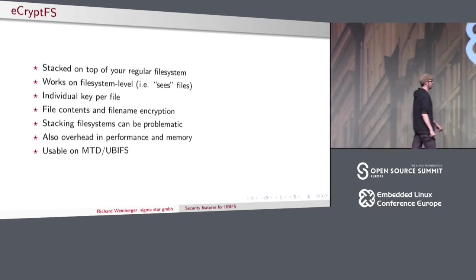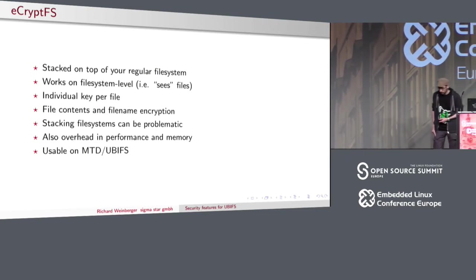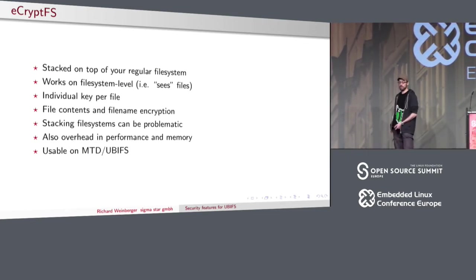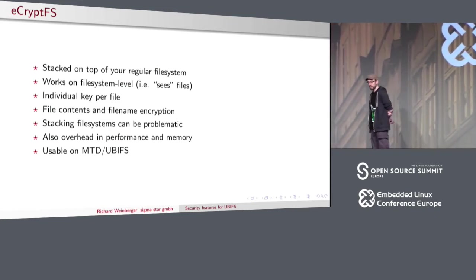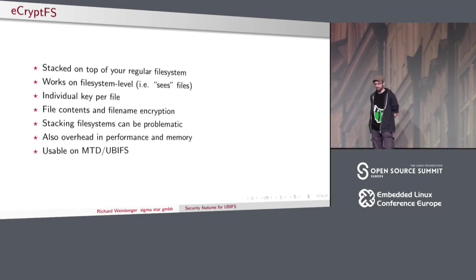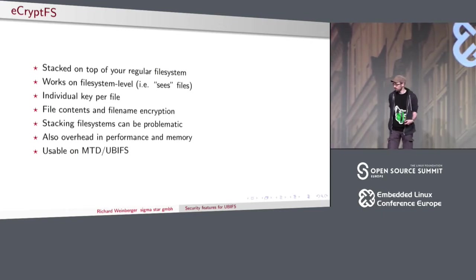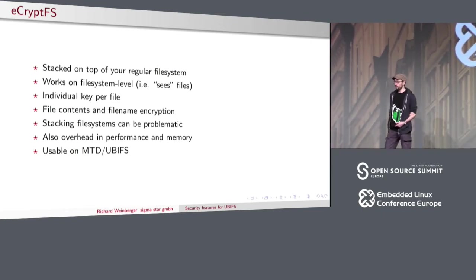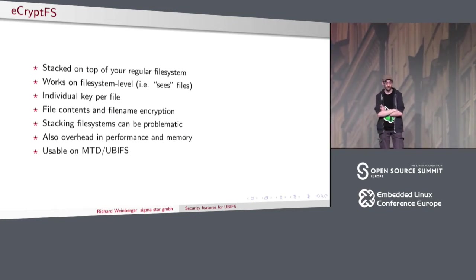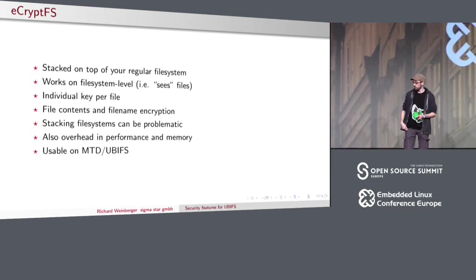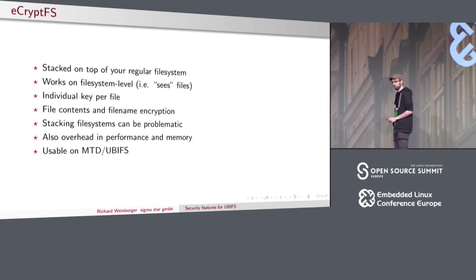On Linux, file system stacking can be problematic, mostly because of performance reasons and memory pressure. In the case of ECryptFS, each file's content would be twice in the page cache — once encrypted and once unencrypted — and on low-powered devices as used with UBIFS, memory usually matters and you don't want that overhead. But it is perfectly usable on UBIFS and many people are using it, so it is one solution that is okay.